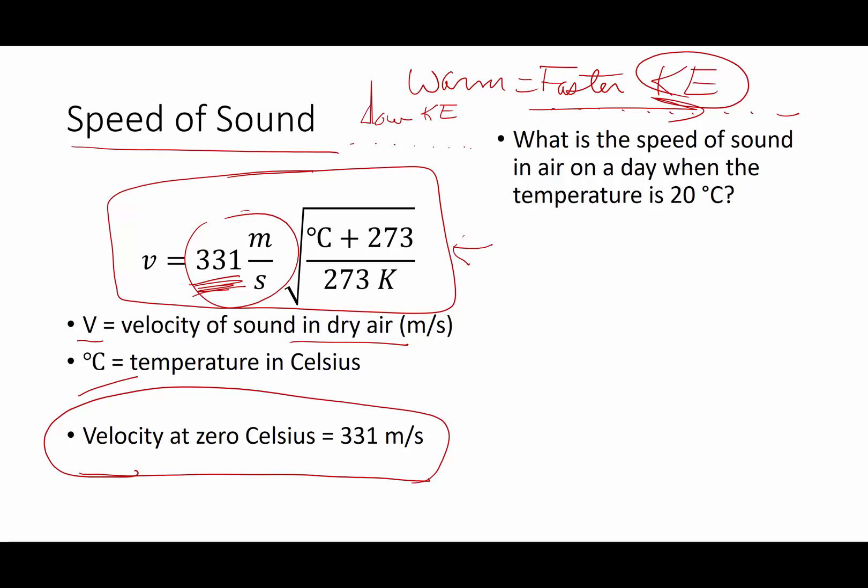So let's go ahead and use this calculation to determine the speed of sound in air on a dry day when the temperature is zero degrees Celsius. So velocity is going to be 331 meters per second times the square root of the temperature on that day, so 20 degrees Celsius. Why are we adding it to 273? Well, adding it to 273 will convert it into Kelvin. So we have to have absolute temperature in Kelvin, and then divide it by 273 Kelvin.